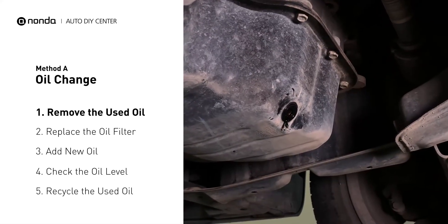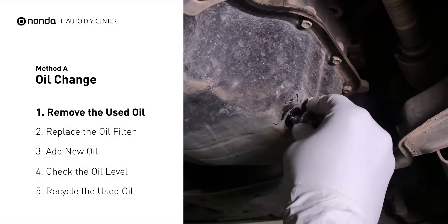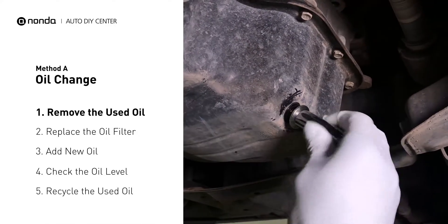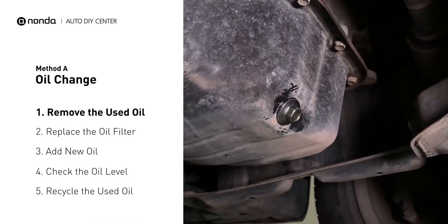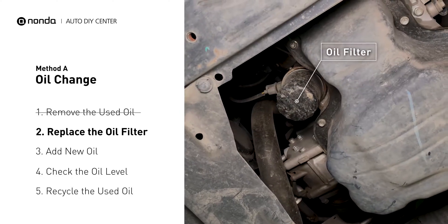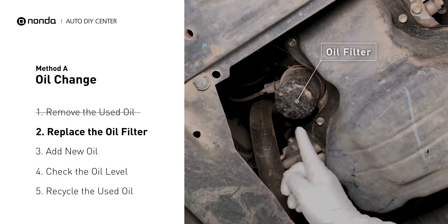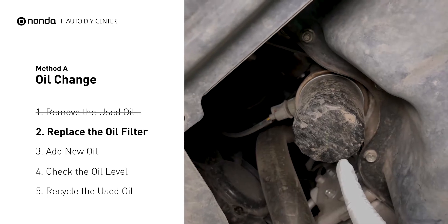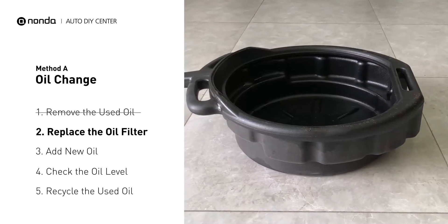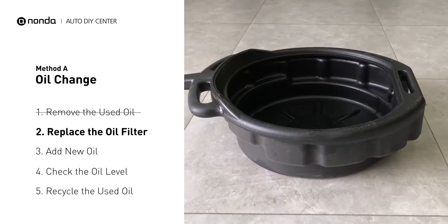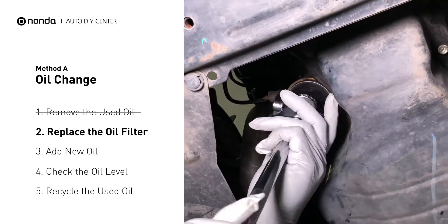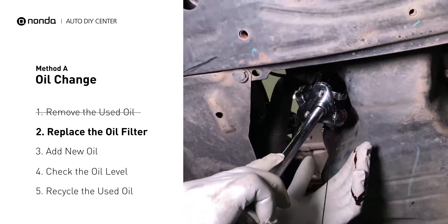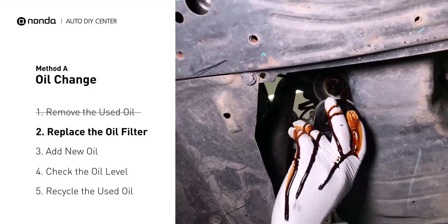Once all the oil is drained, replace the drain plug and tighten it back on. The oil filter is usually located beside the oil pan or under the hood of your vehicle near the engine. Place the collection pan under the filter. There would be oil in the filter itself that could be hot, so it is important that the oil goes into the collection pan.